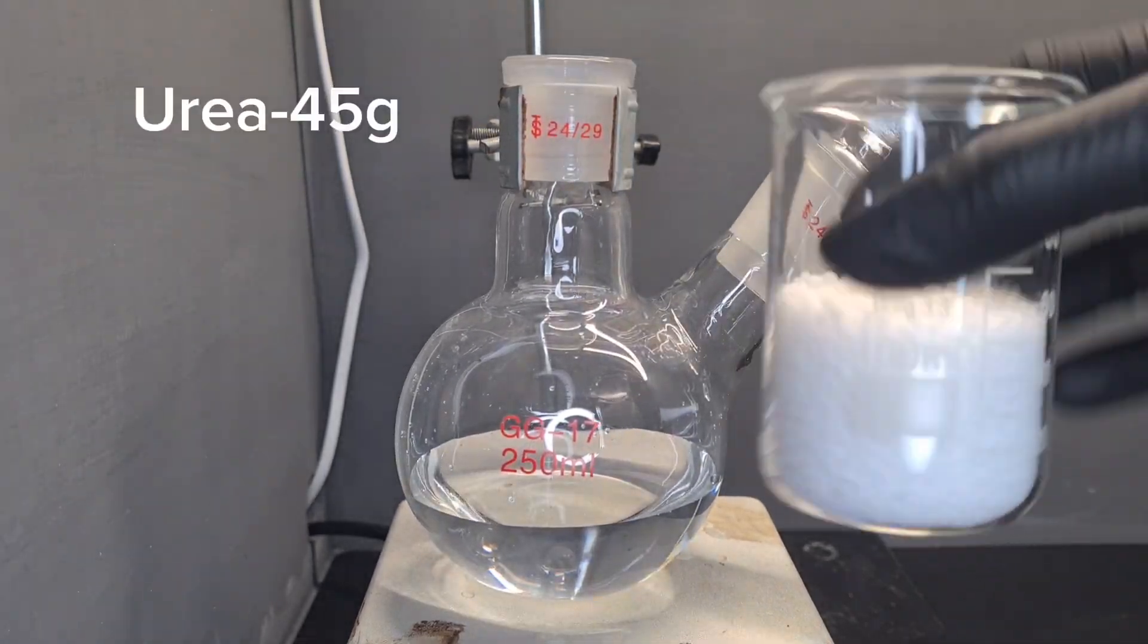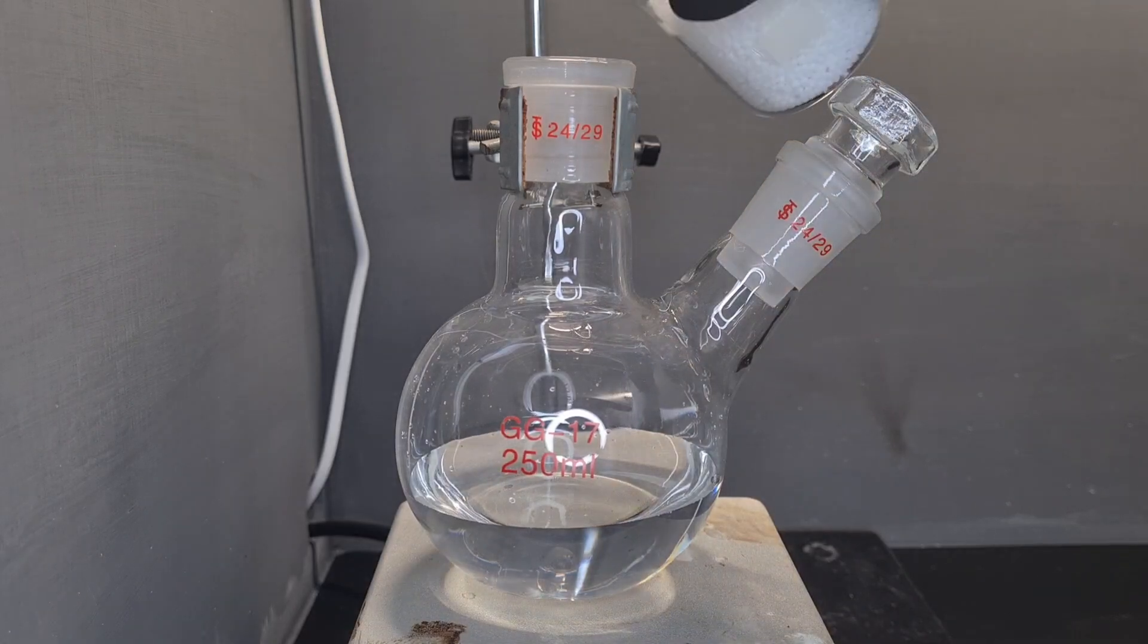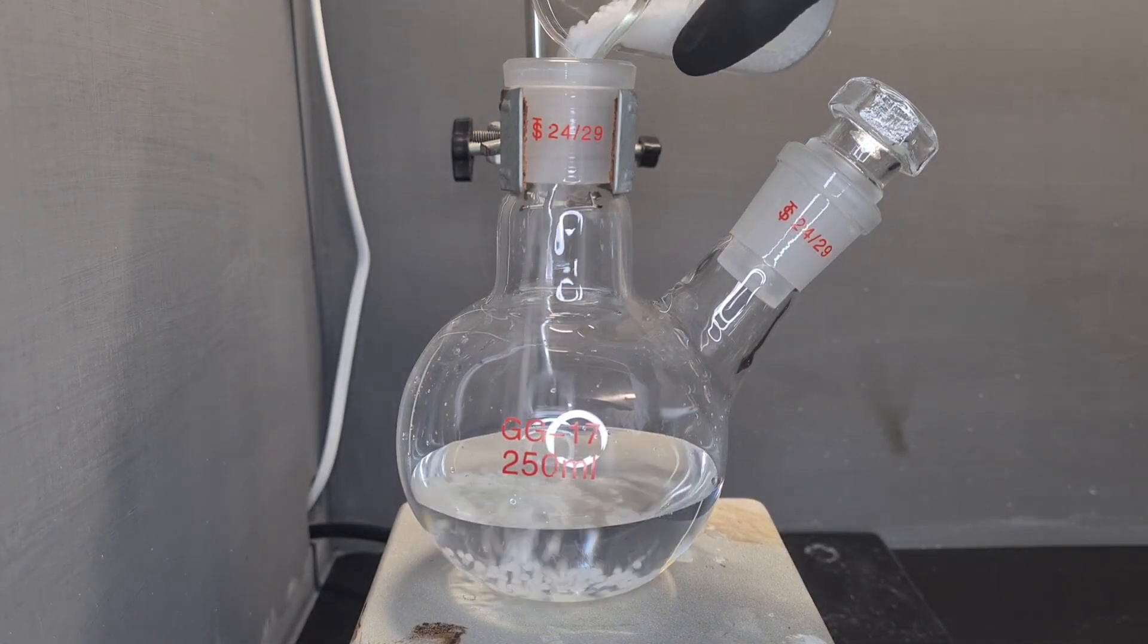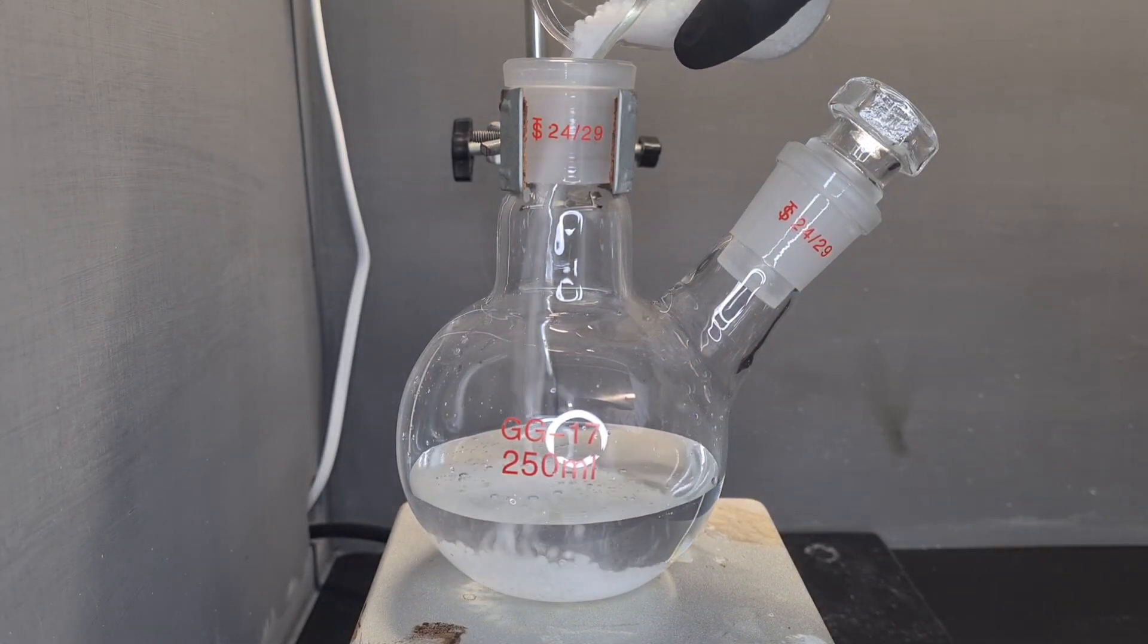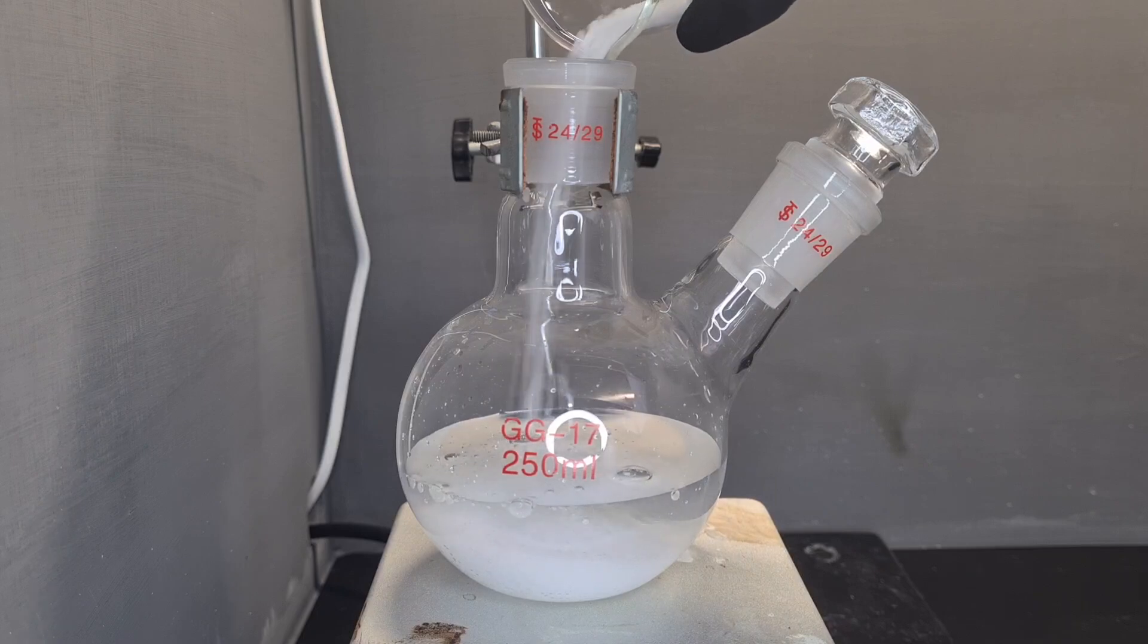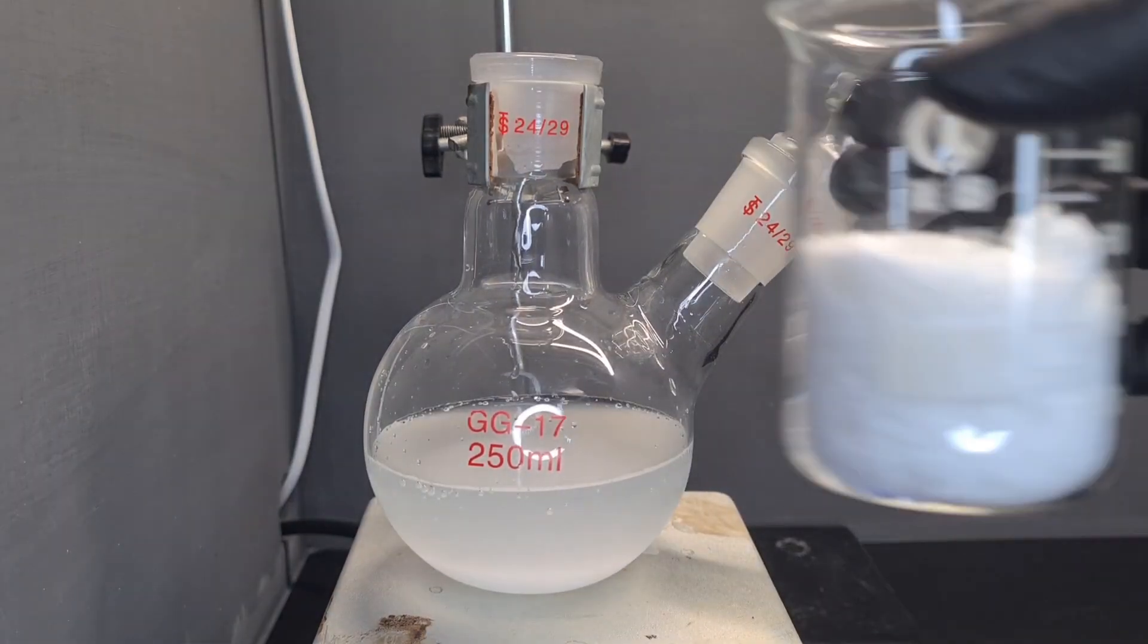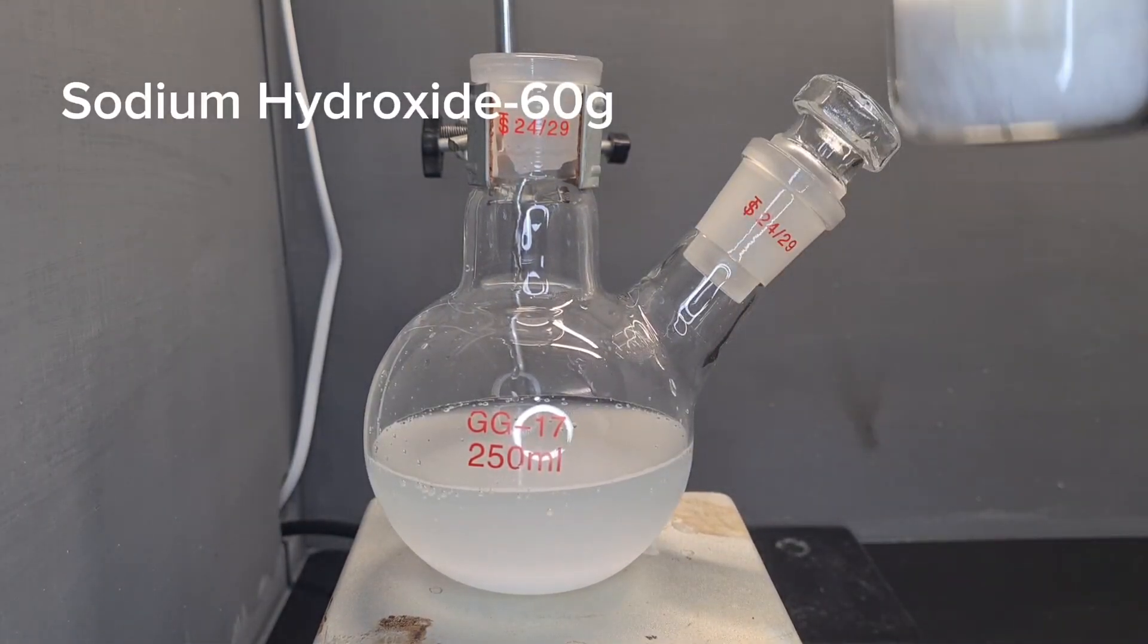Then we're going to add 45 grams of urea. Then I'll add 60 grams of sodium hydroxide.